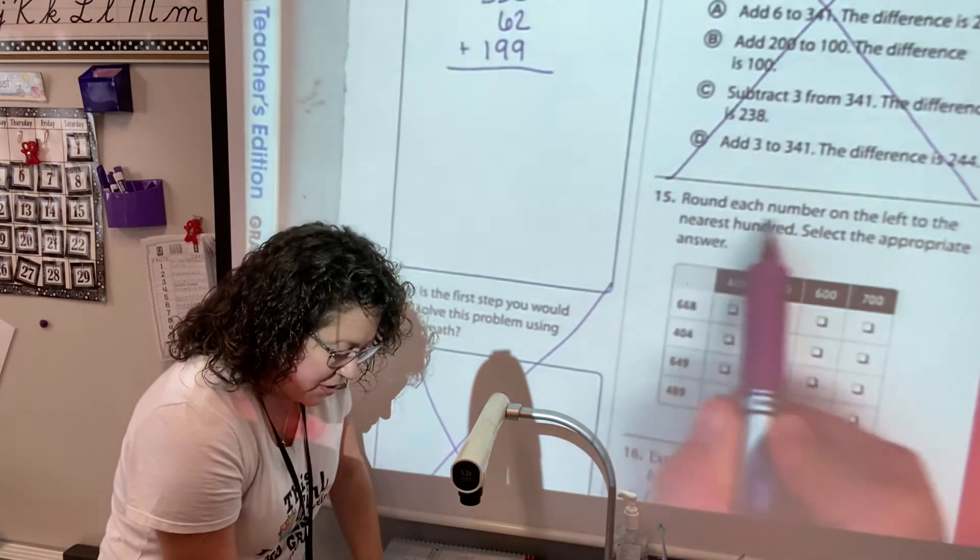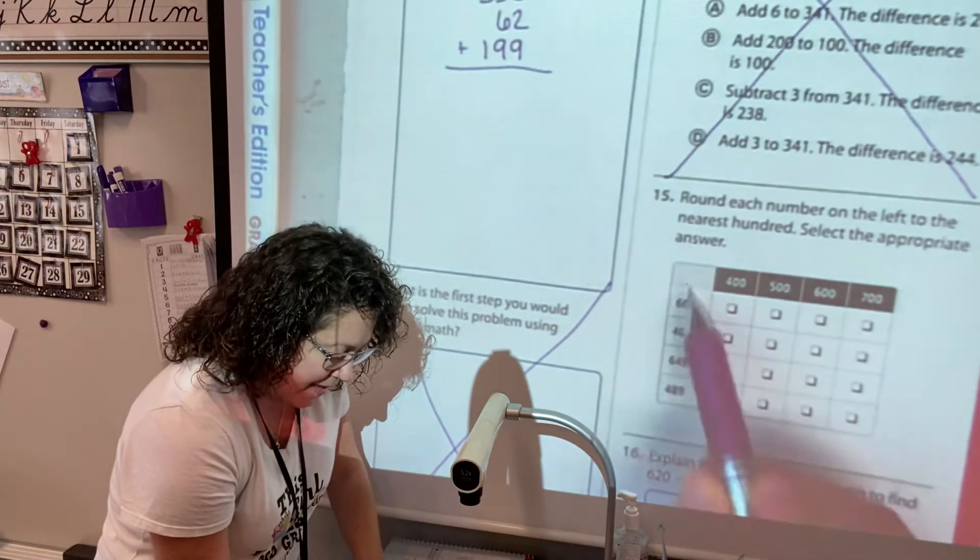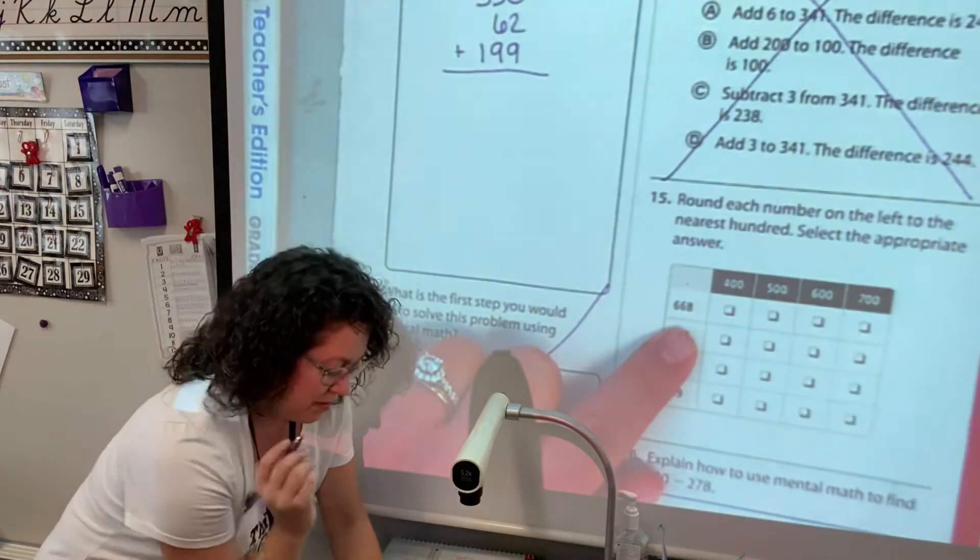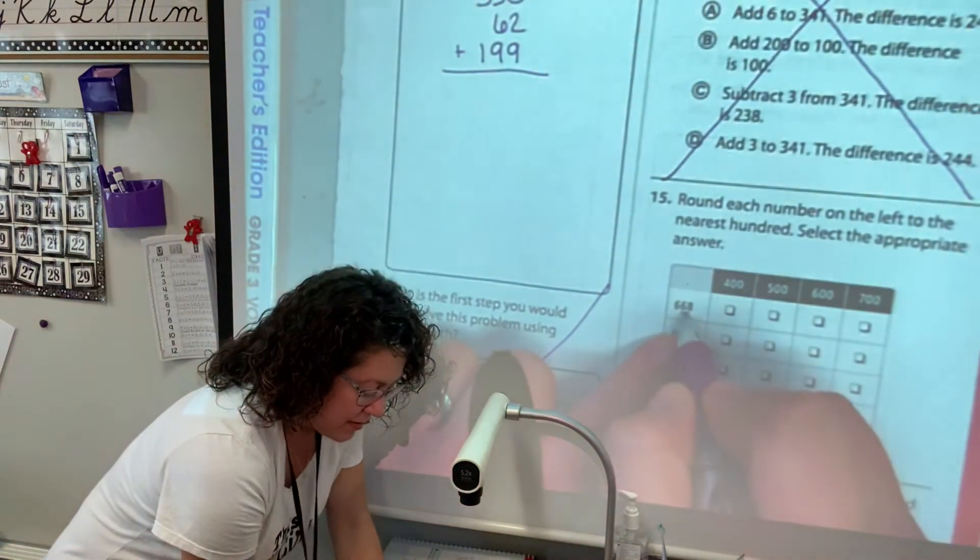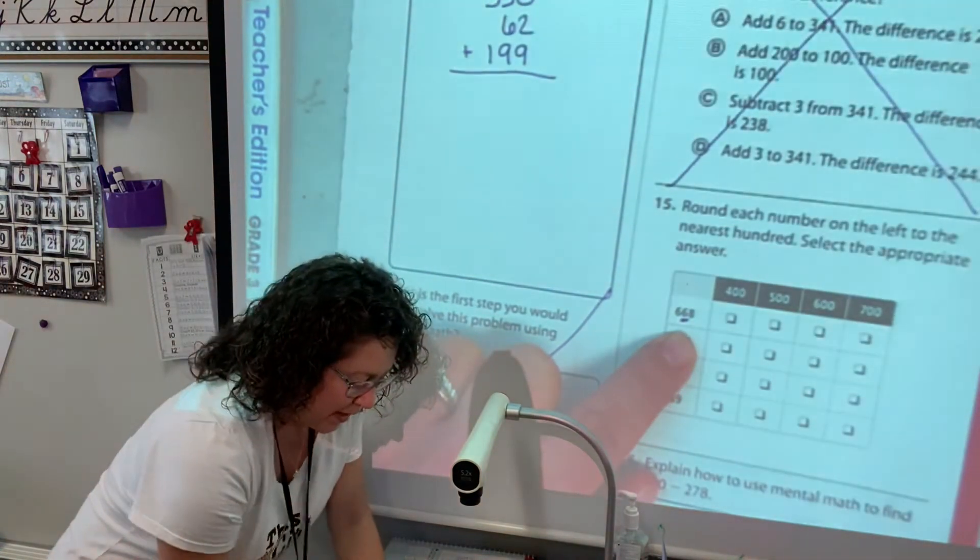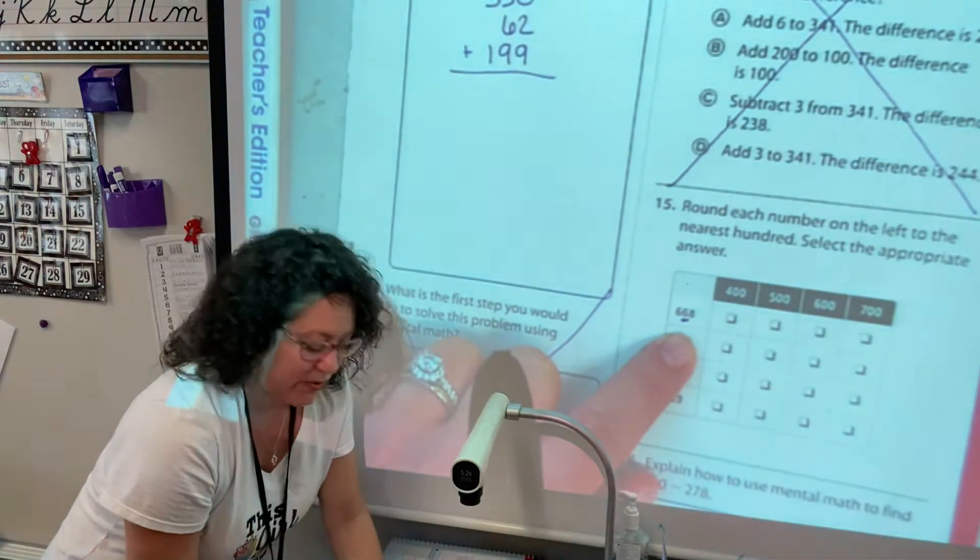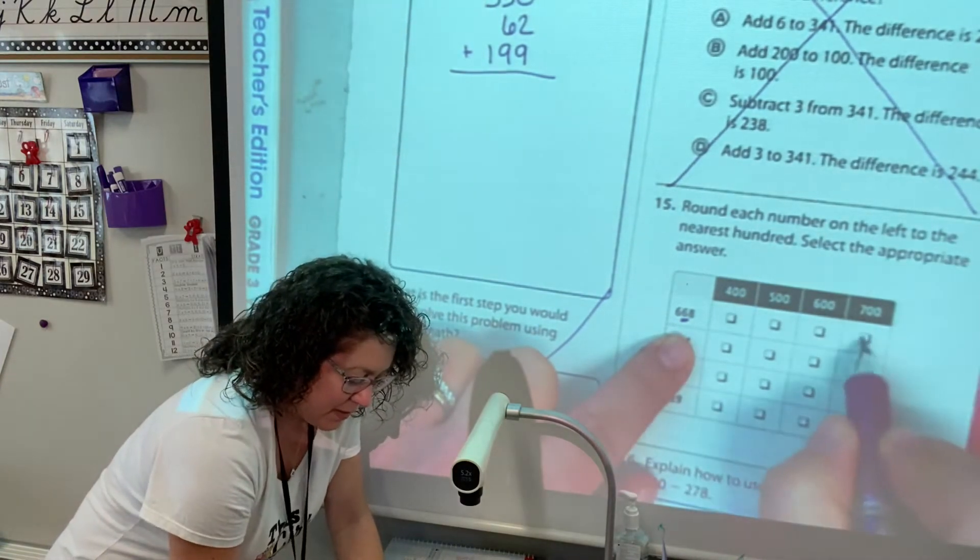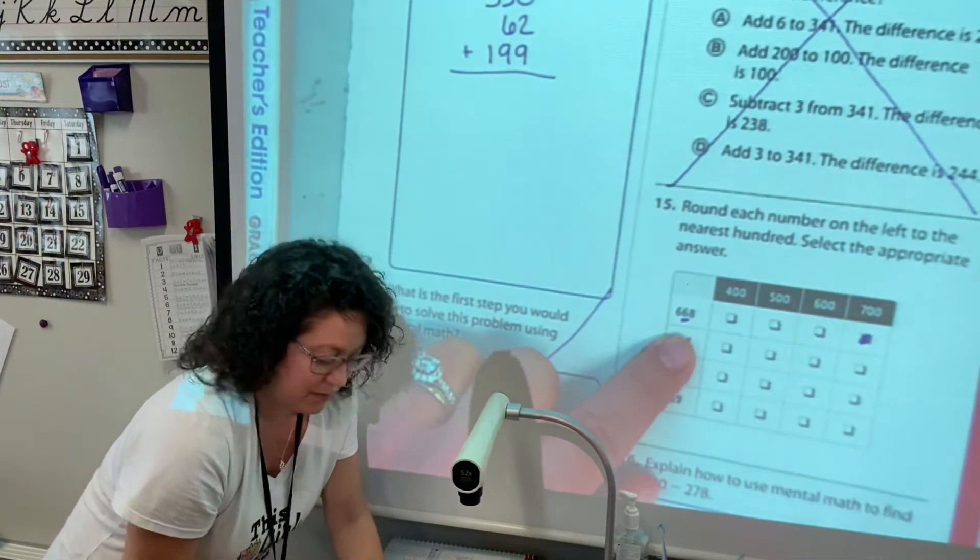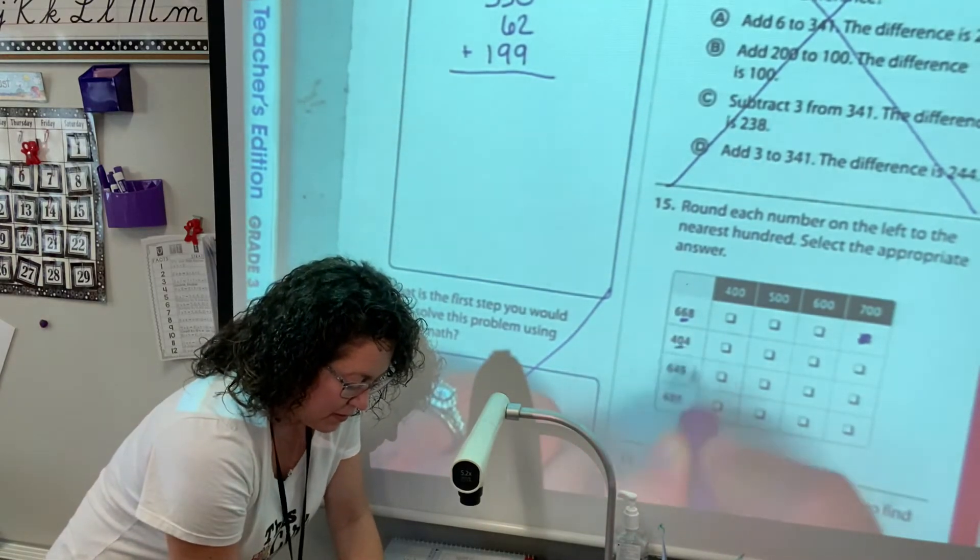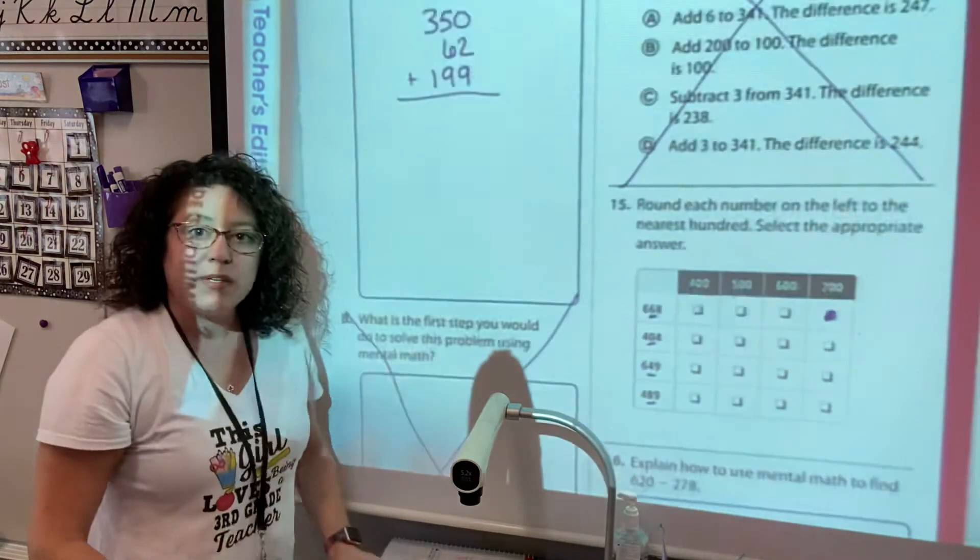Basically, round each number on the left to the nearest hundred. So if I'm rounding to the nearest hundred, I look at the tens. That is a 6, five six seven eight nine climb the vine, we're going up. So 668 is going to be rounded to 700. Then I will color in that box. You're going to round each one to the nearest hundred, and I underline my number that I'm looking at to help.